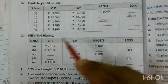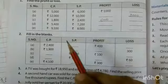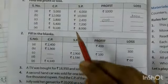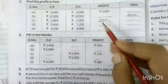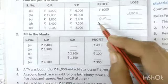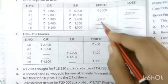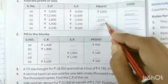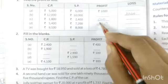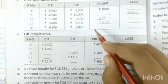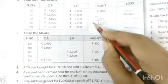Cost price is 5,400 and sell price is 7,200. So the sell price is greater, which means there is also a profit. 7,200 minus 5,400: 12 minus 4 is 8, and 7 minus 5 is 1, giving 1,800 rupees profit.